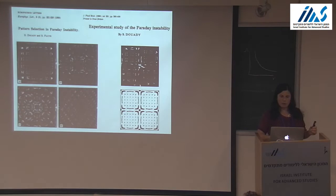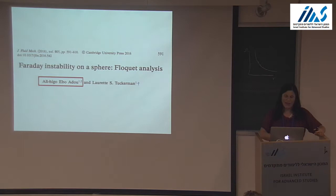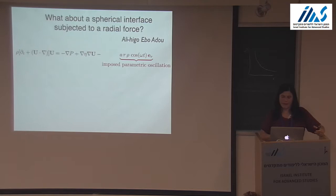We were happy to see in the literature an article by Douady and Fauve that had a schematic picture from their experiment — they too had seen it, so we were happy. We didn't set out to simulate it, but this is what happened. Then we did Faraday instability on a sphere, done by Aligou Eboadu, who has returned to Djibouti.